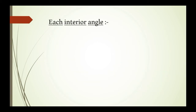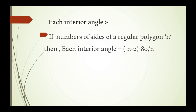The next formula is each interior angle. In a regular polygon with n sides, each interior angle is found using the formula: n minus 2 into 180 degrees, divided by n. In the last slide we found the sum of interior angles; now we are finding the value of each individual interior angle.